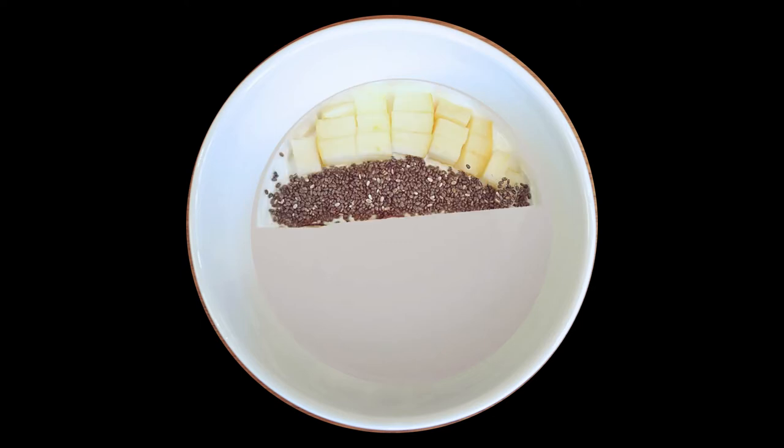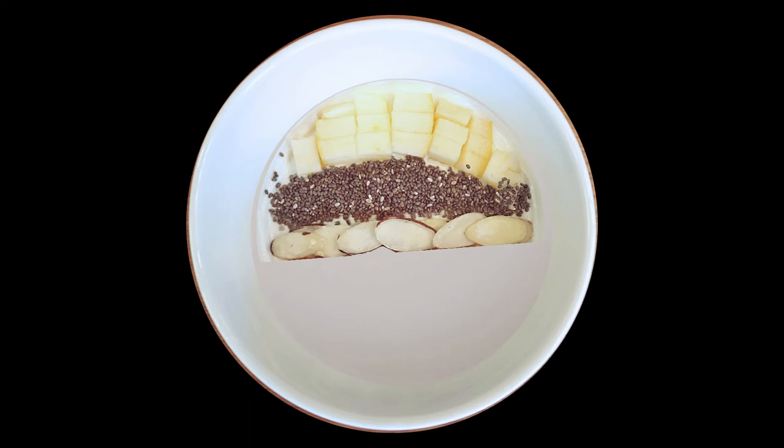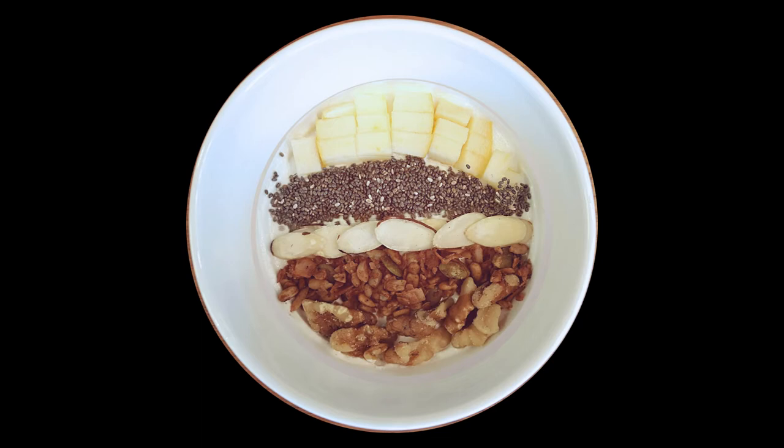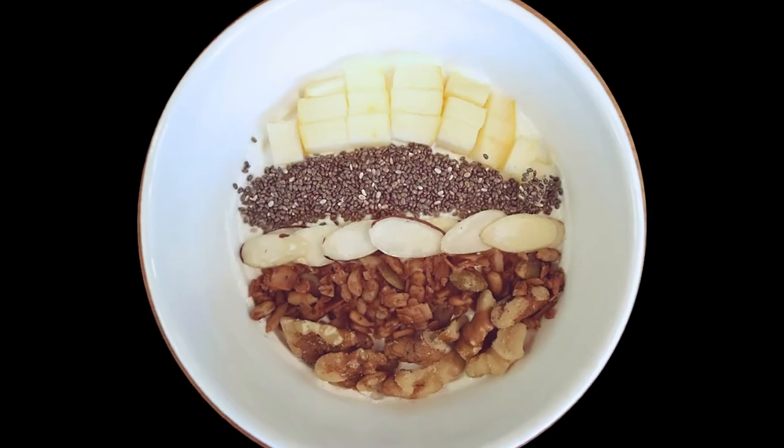Okay, so I start by chopping a quarter of an apple into cubes and then I take a white bowl and flatten out two tablespoons of plain yogurt. I put the apple cubes on top, followed by chia seeds, almond slices, granola with all the raisins taken out, and finally seven walnut halves. And the result is yogurt art.